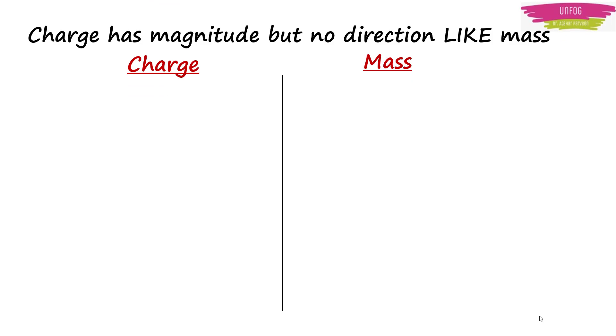As we told earlier, charge is a scalar quantity and has magnitude but no direction, similar to another physical quantity which is mass. But charge differs from mass in many cases.